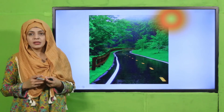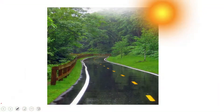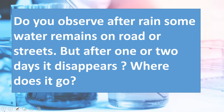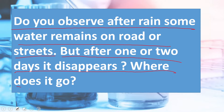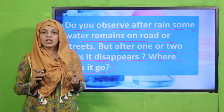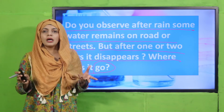Now it's time for an activity. Look at this picture — when it rains, aap dekh saktay hai ke sadak peh paani katha ho gaya hai. Do you observe that after rain some water remains on roads or streets, but after one or two days it disappears? Where does it go?